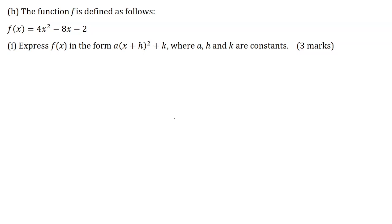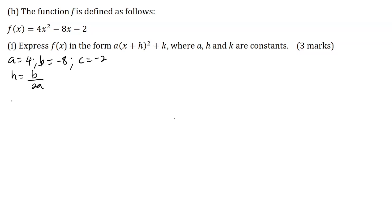Part B. The function f is defined as f of x equals 4x squared minus 8x minus 2. Part 1: express f of x in the form a open brackets x plus h all squared plus k, where a, h and k are constants, for 3 marks. Anytime they ask us to express a quadratic function in this form, we need to complete the square. I'm going to use the formula method. The first thing is to identify a, b, and c: a is 4, b is minus 8, and c is minus 2.